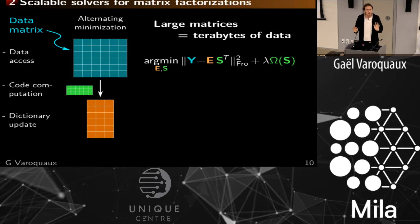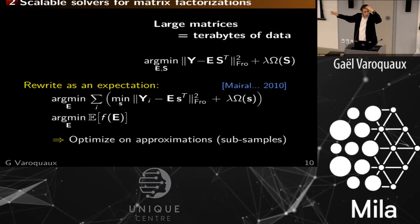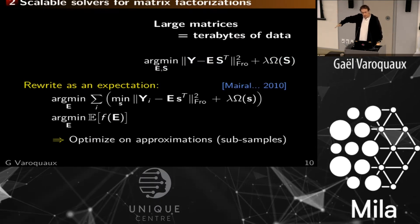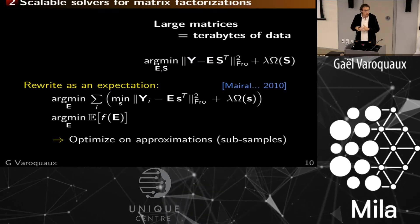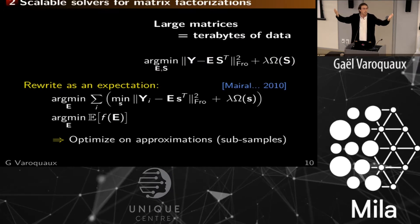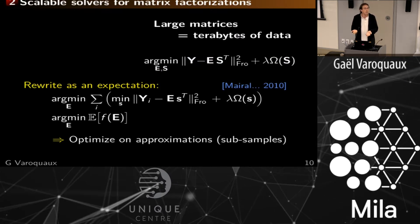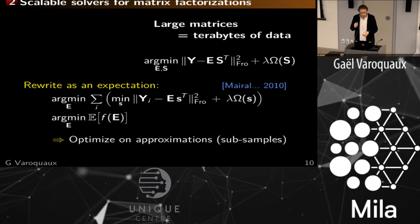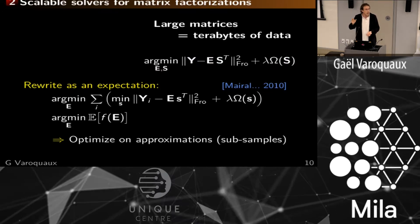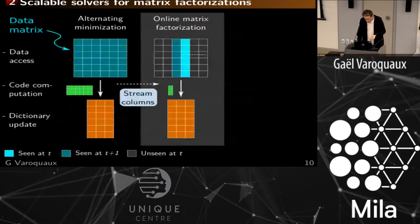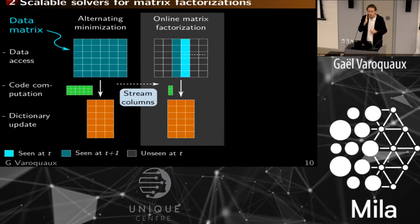What Julien Meral did in 2010 is rewrite this problem as an expectation — writing the Frobenius norm as the sum of individual norms on each sample, because the Frobenius norm is separable. He then said: this sum is something I can consider as an expectation, and I will use stochastic optimization on subsamples. The detail is that this algorithm is not a stochastic gradient descent — that matters a lot.